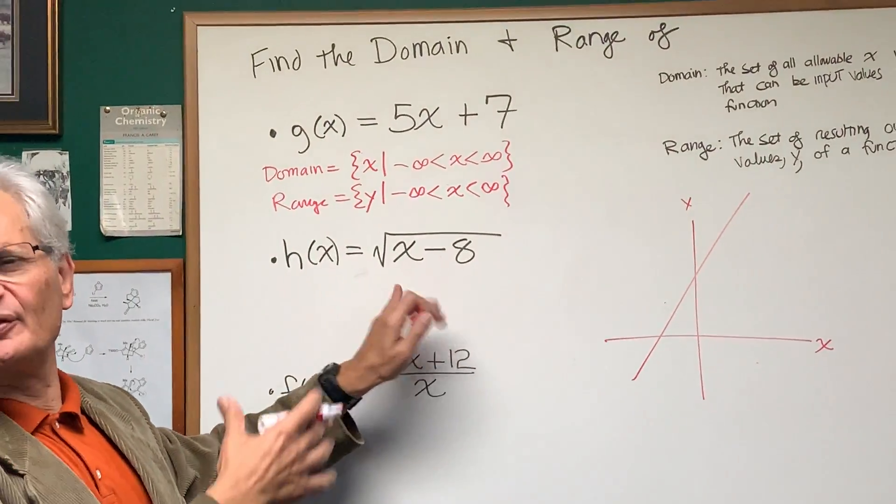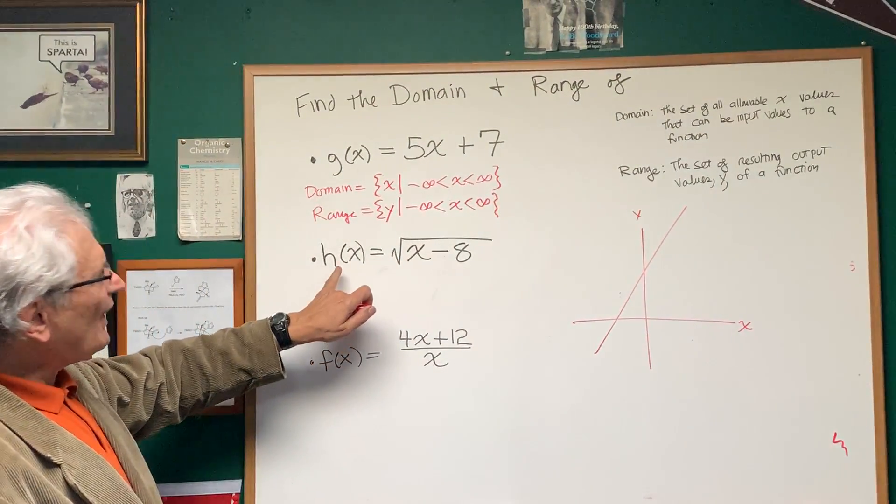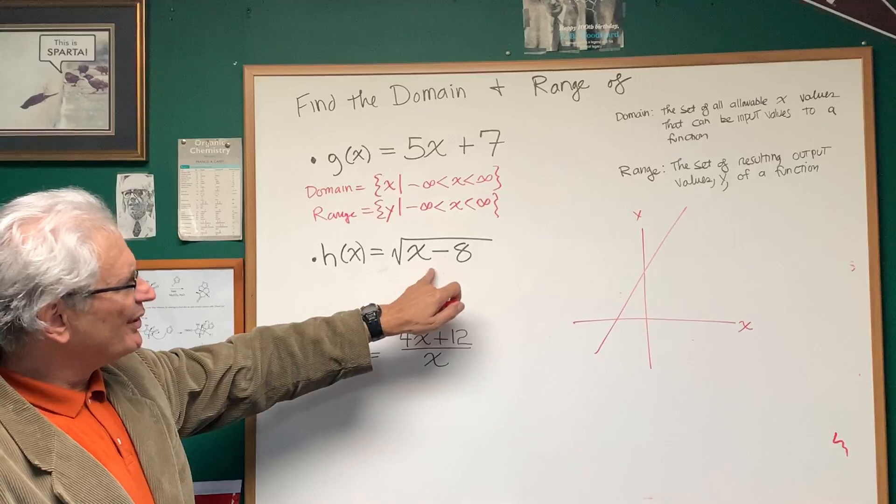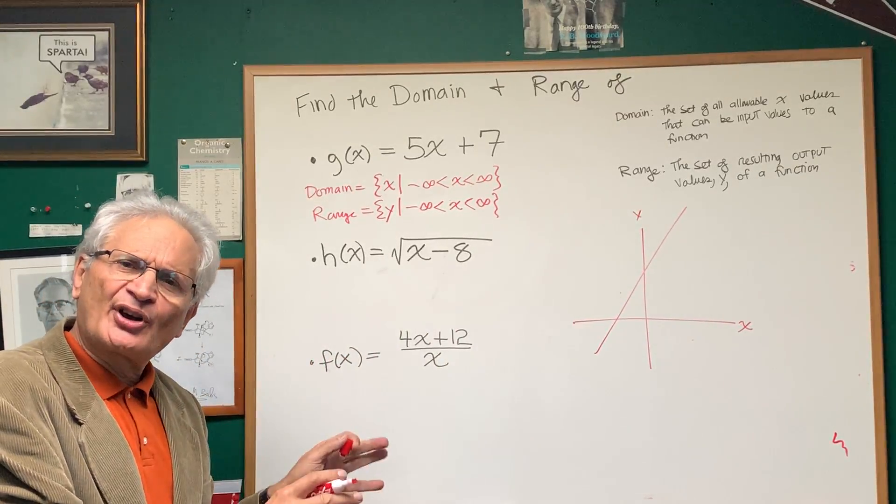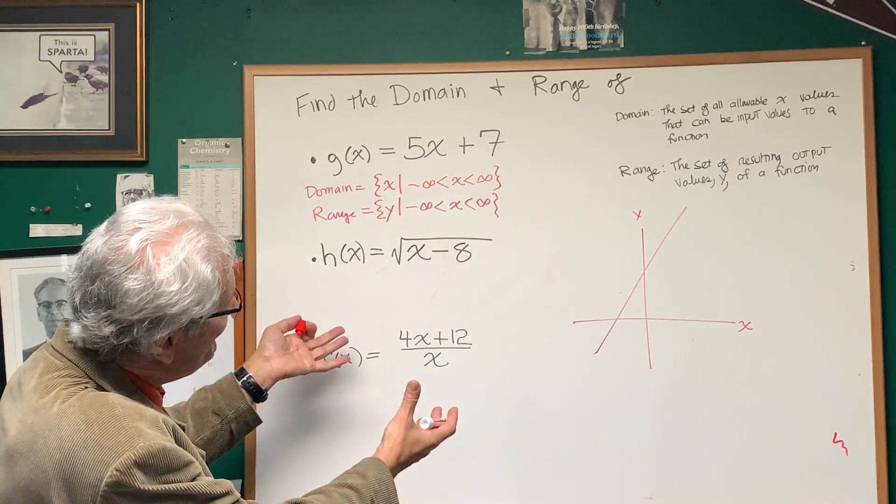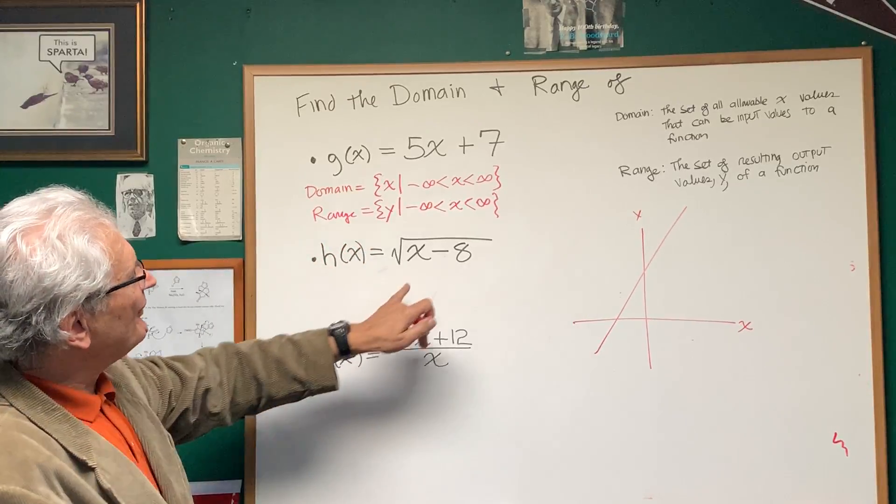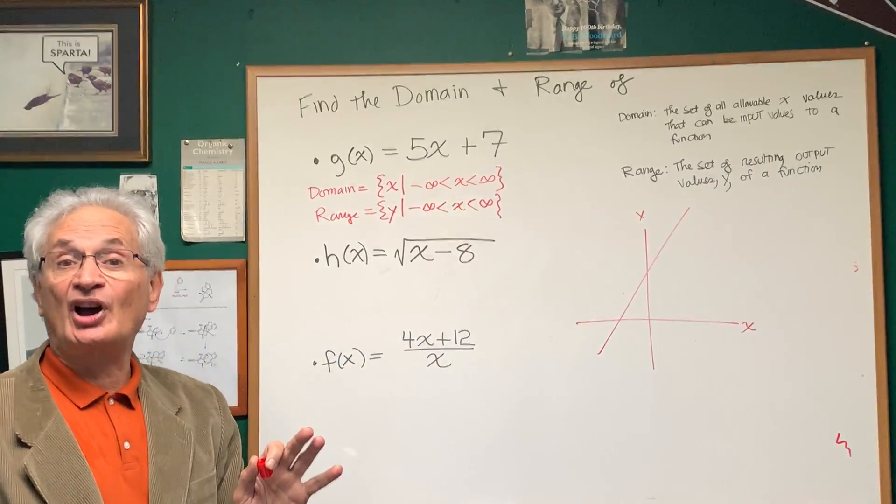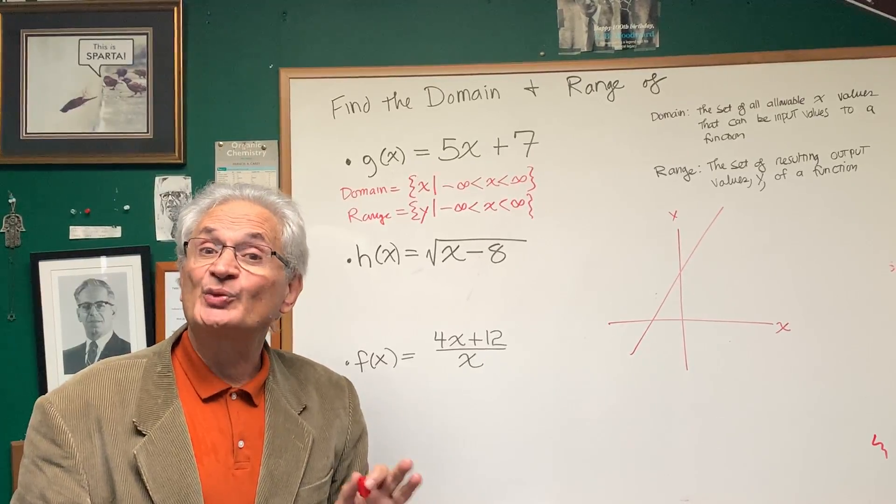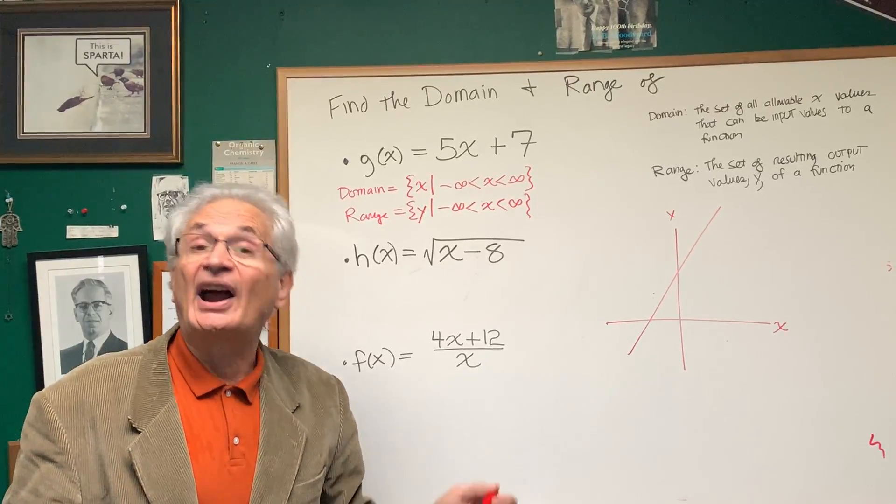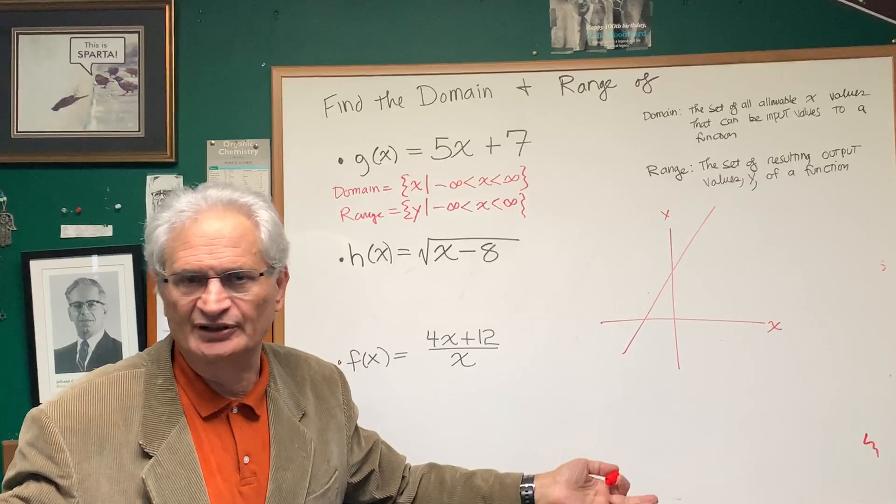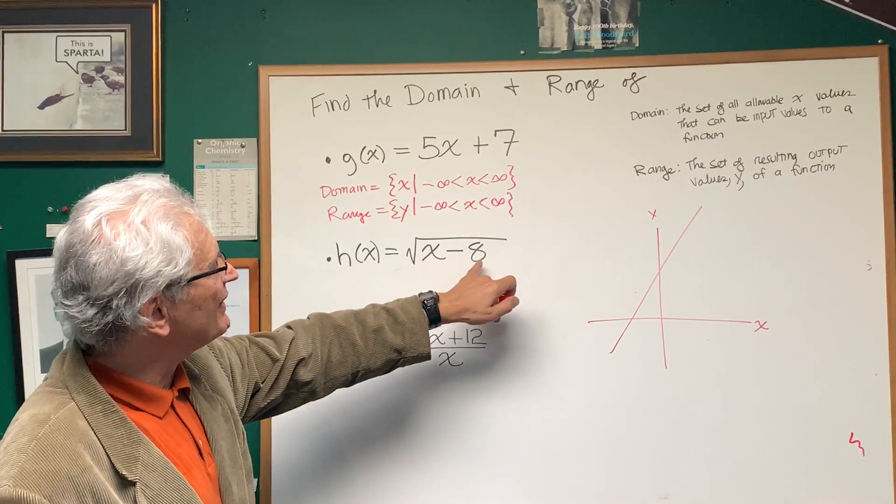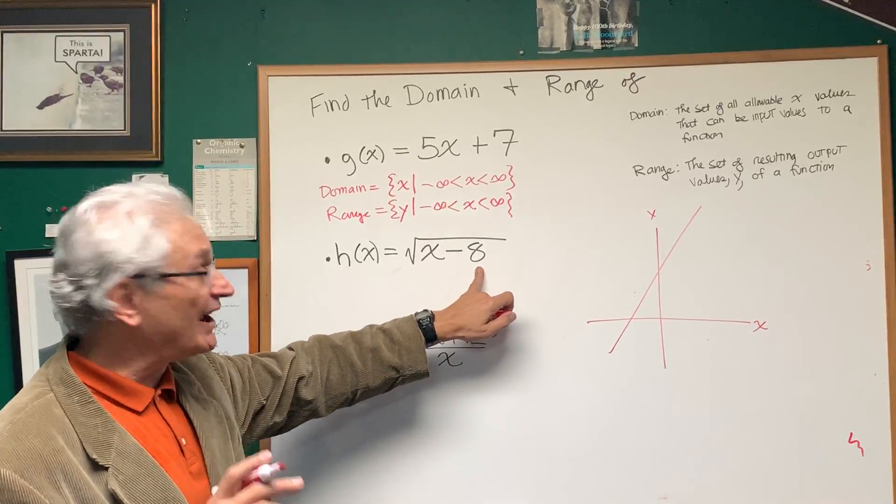Okay, now let's look at one that's a little bit more complicated. h of x equals the square root of x minus 8. Now we're going to infer what the domain is by looking at the algebraic context. Here we have a square root. And I think as you know, underneath the square root we cannot have a negative number and still be within the domain of real numbers.